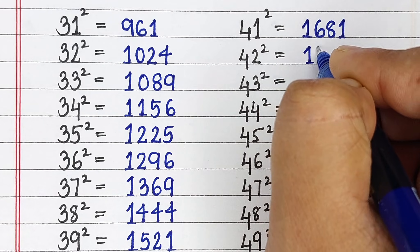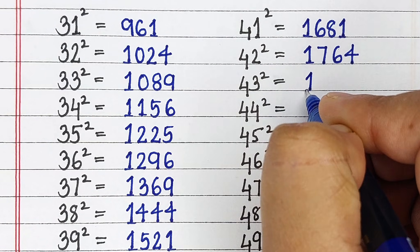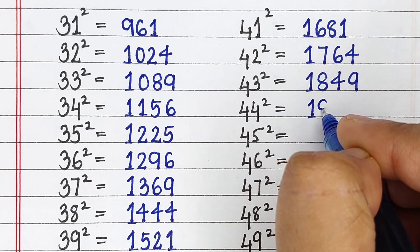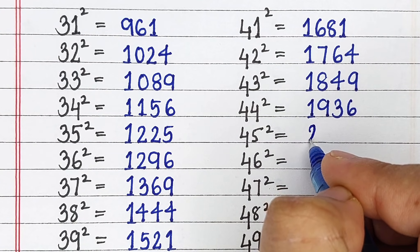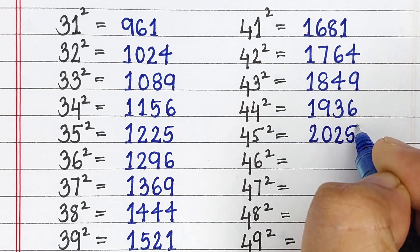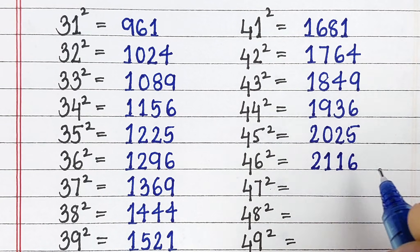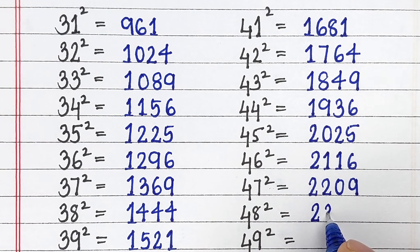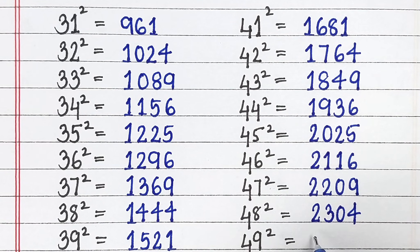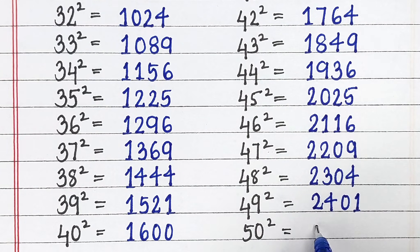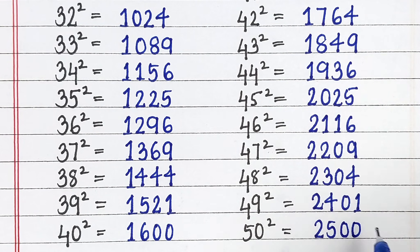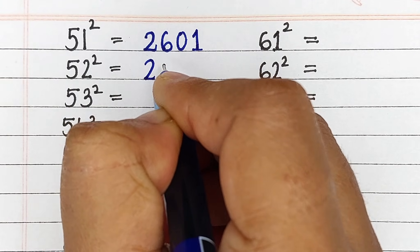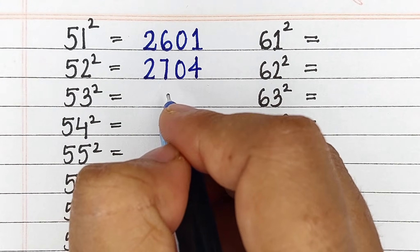Square of 42 is 1764, square of 43 is 1849, square of 44 is 1936, square of 45 is 2025, square of 46 is 2116, square of 47 is 2209, square of 48 is 2304, square of 49 is 2401, square of 50 is 2500, square of 51 is 2601, square of 52 is 2704, square of 53 is 2809.